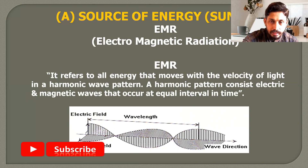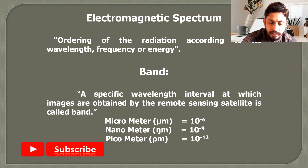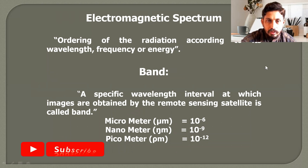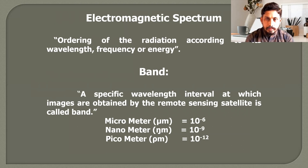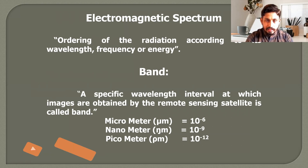For better understanding, we convert electromagnetic radiation into an electromagnetic spectrum, because identifying different wavelengths and using them for remote sensing purposes is necessary. The electromagnetic spectrum is simply the ordering of radiation according to its wavelength, frequency, or energy. Electromagnetic radiation has different wavelengths, different energies, and different frequencies — on the basis of these three things we order that radiation to form the spectrum, and then choose a specific portion for a specific kind of remote sensing.